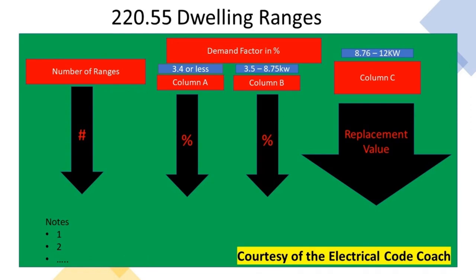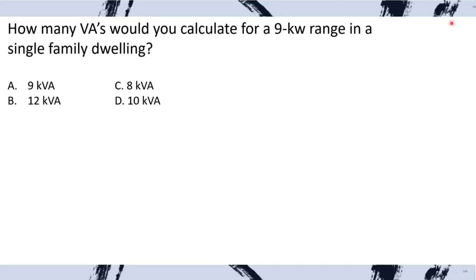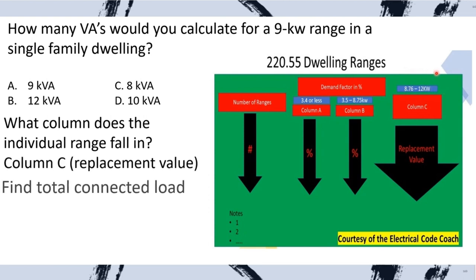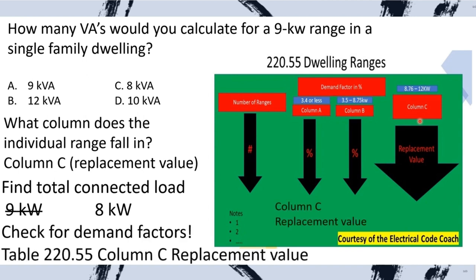Practice problem: How many VAs for a 9 KW range in a single-family dwelling? First, what column does our individual range fall in? It's 9 KW, so it falls into Column C — greater than 8.76 but not over 12. Column C is a replacement value. Find the number of ranges on the left-hand side: 1. Cross over to Column C: the replacement value is 8 KW. Column C is not a multiplier, so there are no demand factors to apply. We select C.